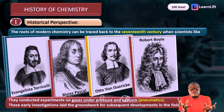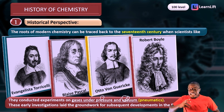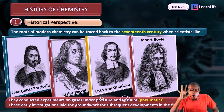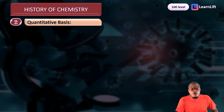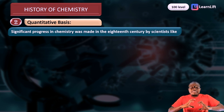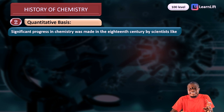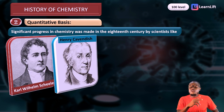Their early investigations into pressure and vacuum laid the groundwork for subsequent developments in chemistry. After them, we move to the second history — the quantitative basis. Significant progress in chemistry was made in the 18th century by scientists such as Carl Wilhelm Scheele and Henry Cavendish.